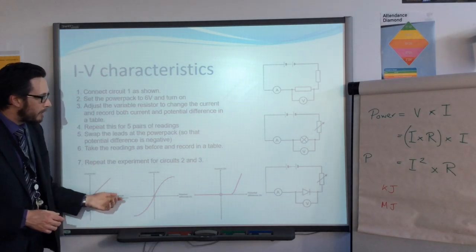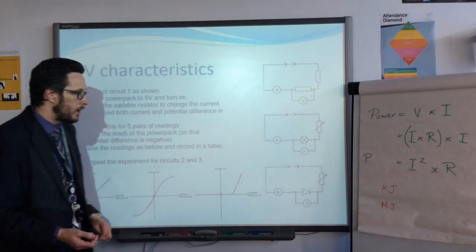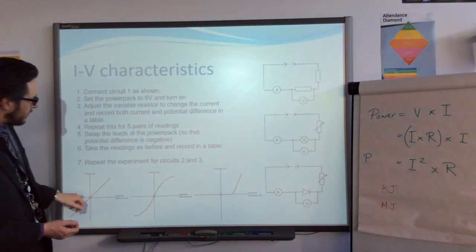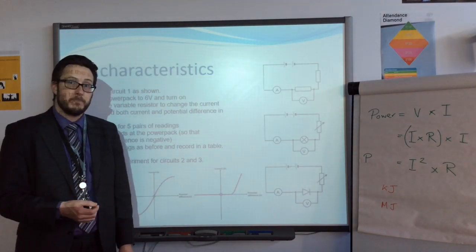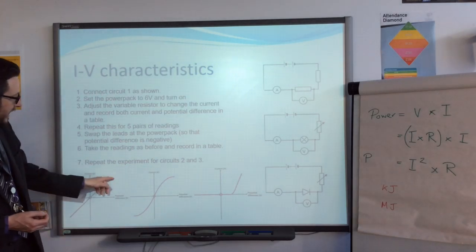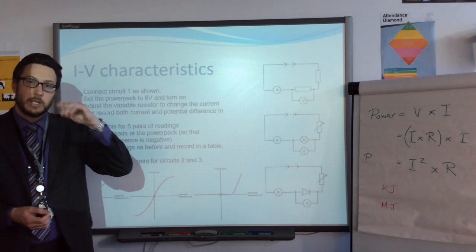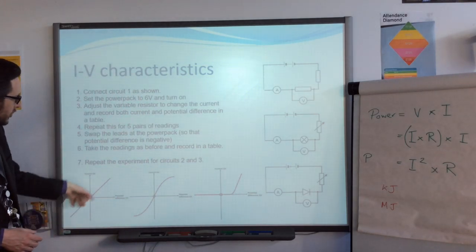I was just at the point where I was talking about this experiment. Once you've got your results for current and voltage and plotted those for different components, you'd see a pattern that looked like this. They can ask you questions about these graphs directly. This one is for your standard resistor, directly proportional. As you increase the voltage or the current, the other one goes up as well in a straight line.